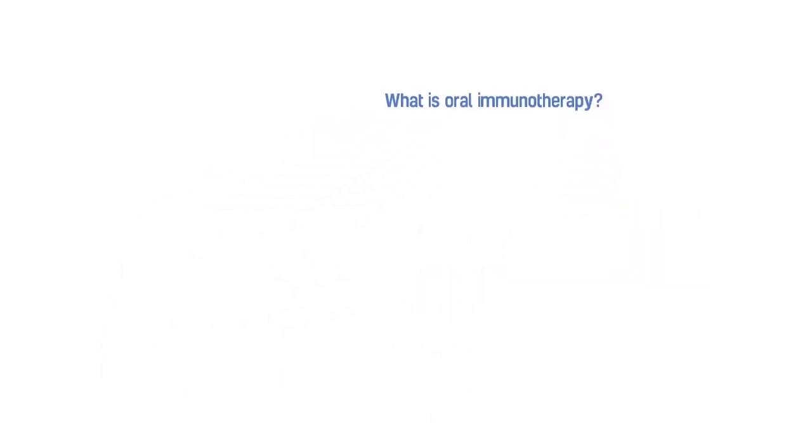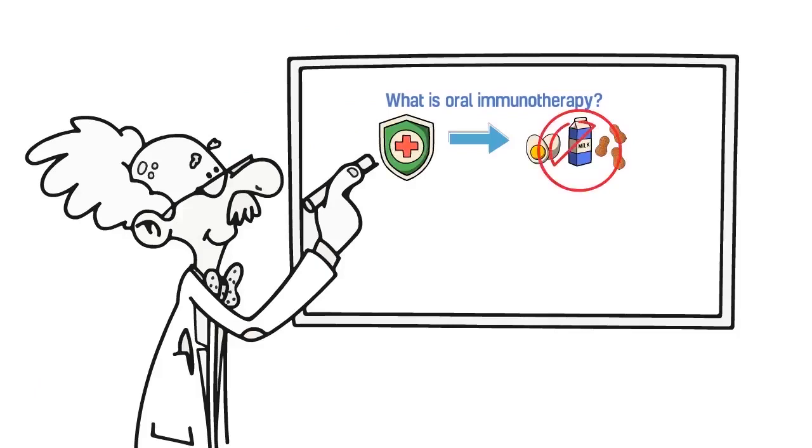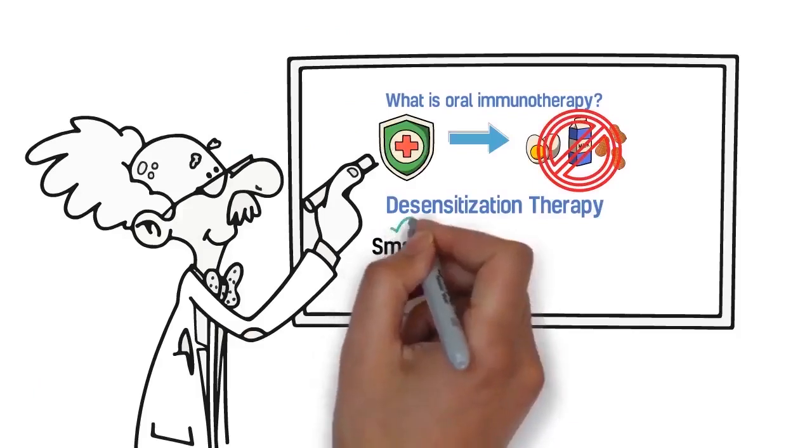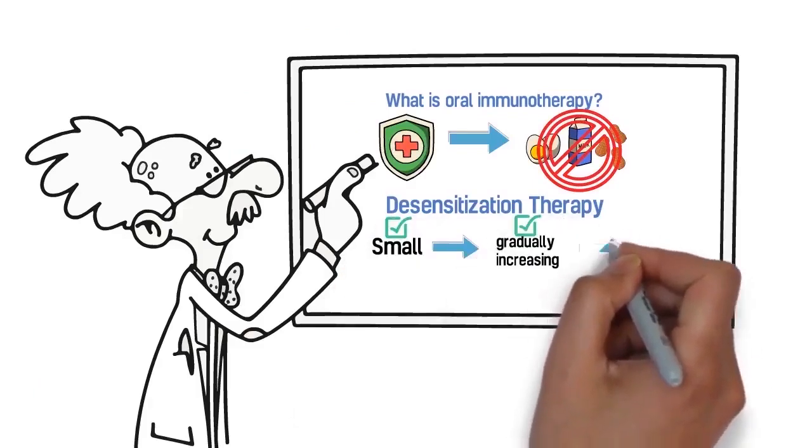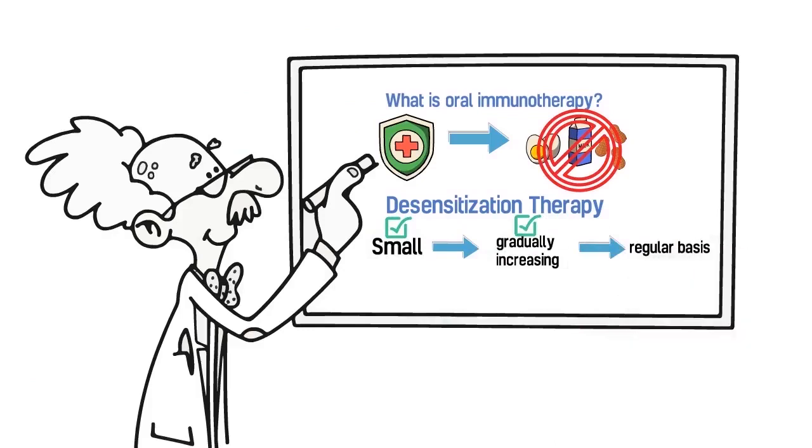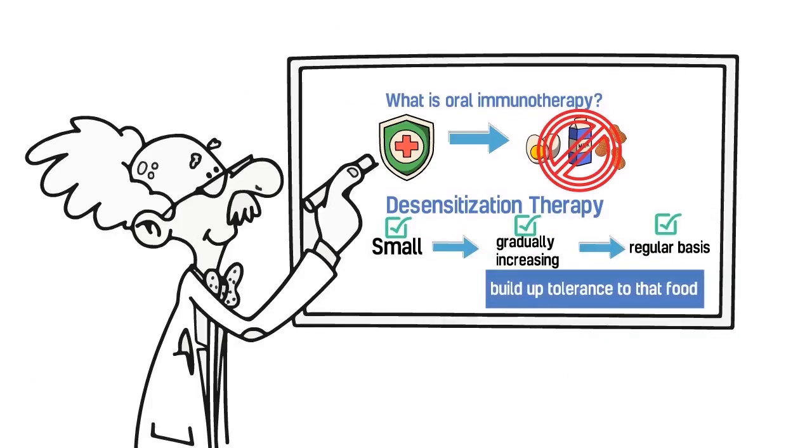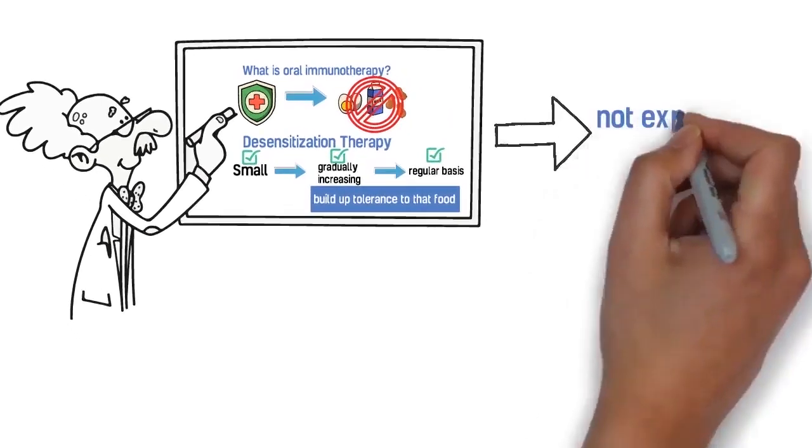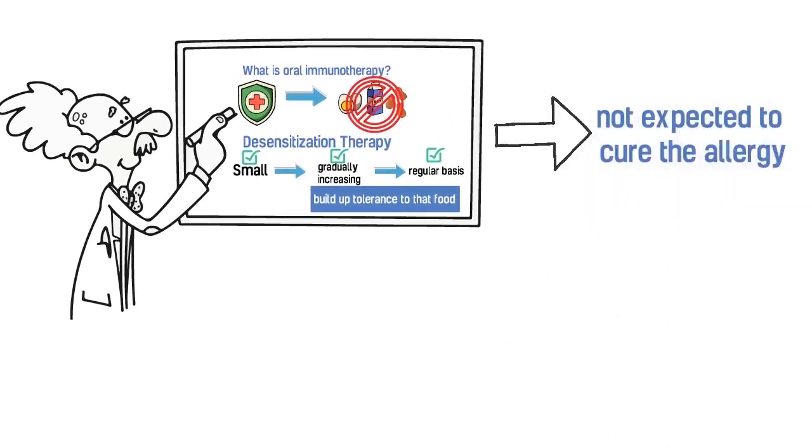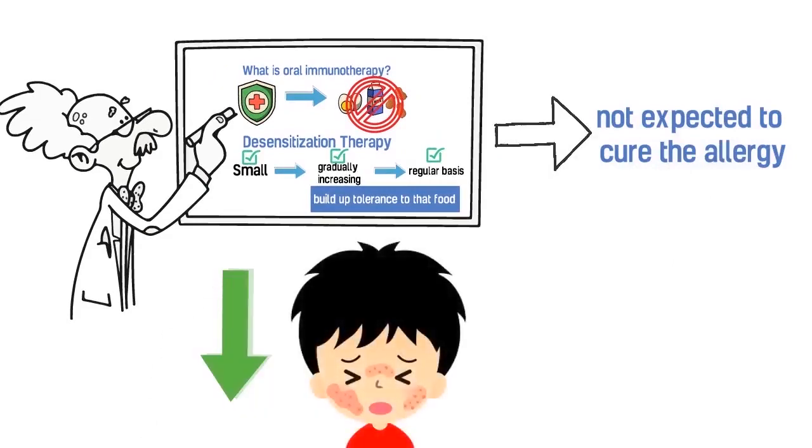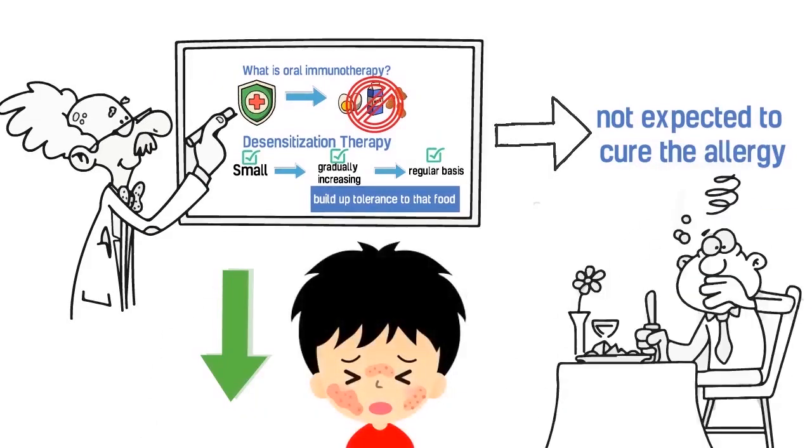Oral immunotherapy is a medical treatment for food allergy, also referred to as desensitization therapy. It involves feeding a food allergic individual small, gradually increasing amounts of a food they are allergic to on a regular basis in order to build up tolerance to that food. This treatment is not expected to cure the allergy, but can make a person less likely to have an allergic reaction if accidentally exposed to the food.